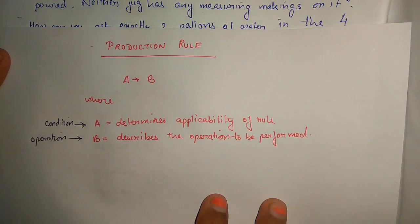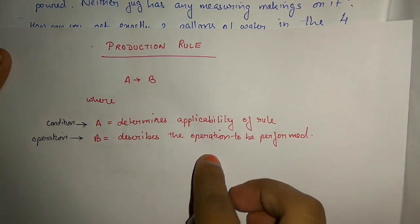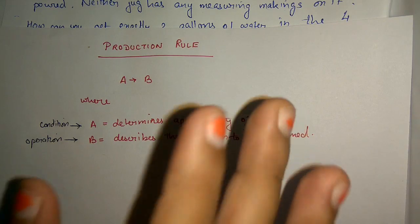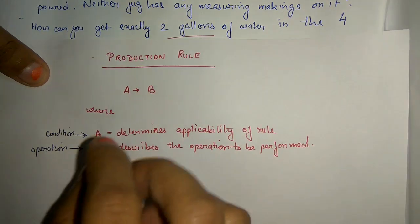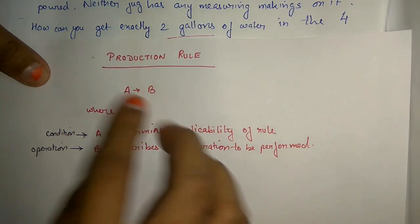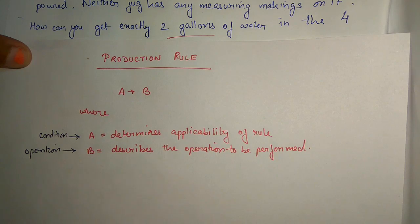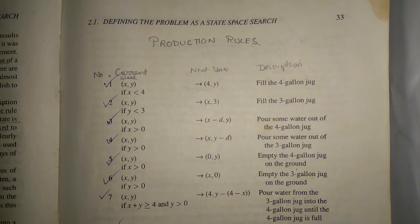The production rule is of the form A → B, where A determines the applicability of the rule and B describes the operations to be performed. Basically, A tells the condition — if that condition is true for the current state, then the B operation will be performed. If the state doesn't fulfill this condition, then B will not be performed and we move on to the next production rule. These are the production rules for the water jug problem — you don't need to memorize them, as you can write them on your own and you'll get the same rules if done correctly.